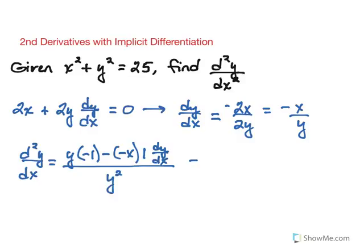If we simplify this a little bit, we'd have negative y plus x. Now in place of dy dx, we're going to put the negative x over y that we had found above.